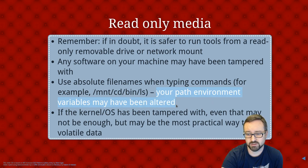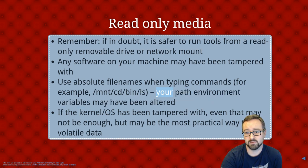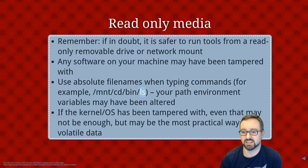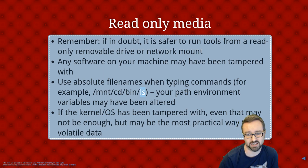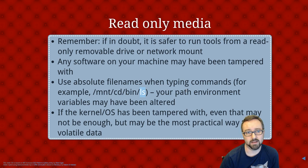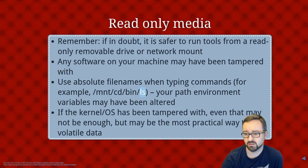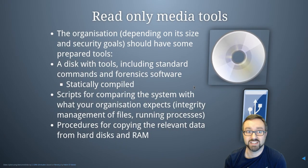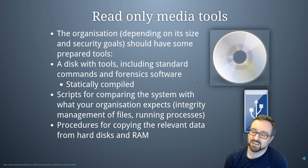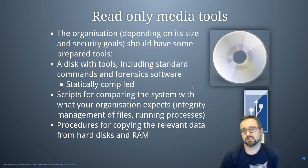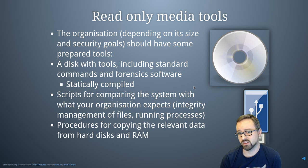Your PATH environment variable may have been altered, so when you run ls it might not run what's in the bin directory — it might run something different. You should use absolute file names when doing these investigations. Even that might not be enough if your kernel or operating system has been tampered with, but this is the most practical way to go about looking for and collecting volatile data from your system.